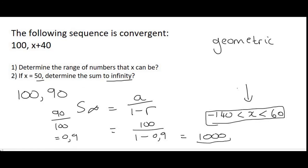So the sum to infinity is 1000. What that means is that this sequence, because it's going to get smaller and smaller and smaller, if you add up all the terms it will never go past 1000.